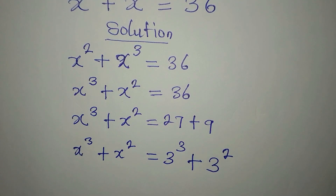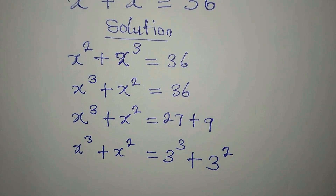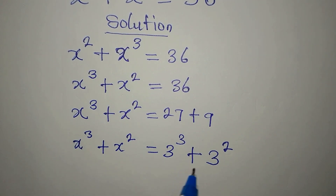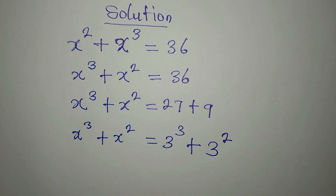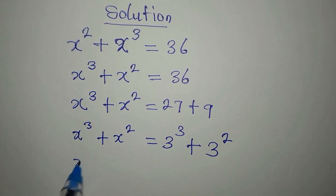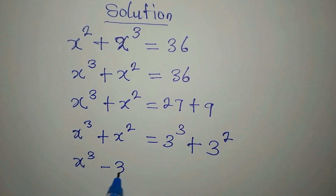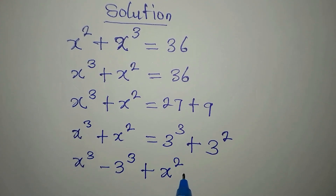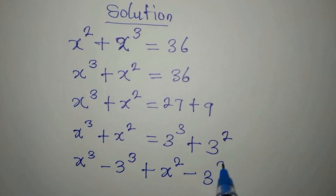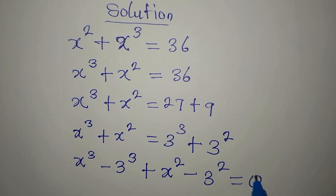Now if you compare the left-hand side and the right-hand side, you should be able to know the real value of x. But since we are solving it completely, we will be finding other values, so no need for comparison at the moment. Let's take both terms to the left: x to the power of 3 minus 3 to the power of 3, plus x squared minus 3 to the power of 2, everything equals zero.